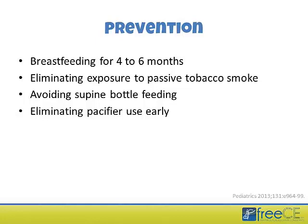Beyond immunizations, other measures can decrease AOM risk. Breastfeeding for four to six months helps prevent AOM episodes by transmitting maternal antibodies. Eliminating exposure to passive tobacco smoke also reduces risk. Additionally, avoiding supine bottle feeding and eliminating early pacifier use have been shown in the literature to decrease AOM risk. Together these modifiable factors can make a meaningful difference in preventing acute otitis media in infants and children.